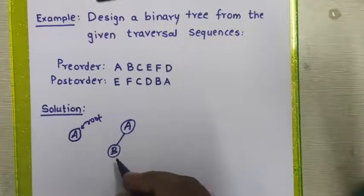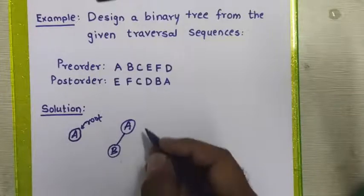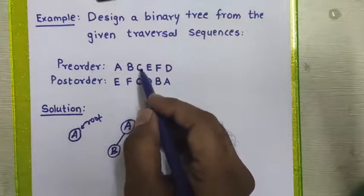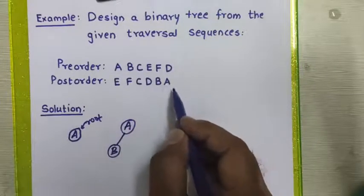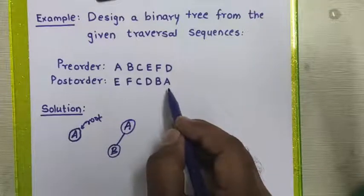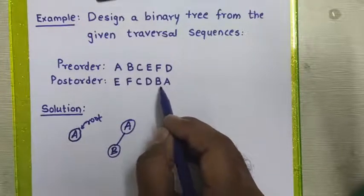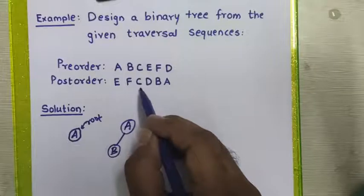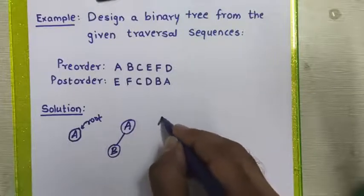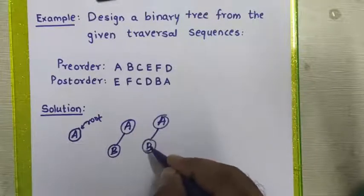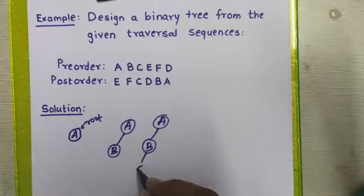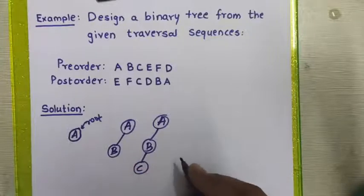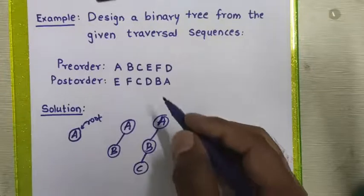After placing B, we pick the next element from the pre-order sequence: node C. We check it in the post-order sequence — it appears before node A and also before node B, meaning it is part of node B and must be placed below node B. Since node B does not have any left or right child, we place node C to the left-hand side of node B.